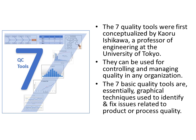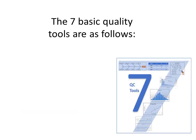The 7 basic quality tools are essentially graphical techniques used to identify and fix issues related to product or process quality. The 7 basic quality tools are as follows.